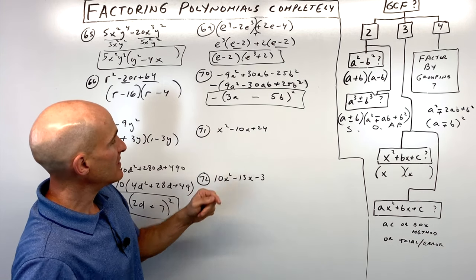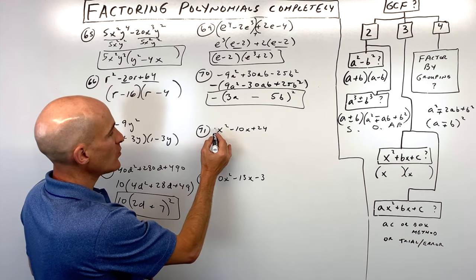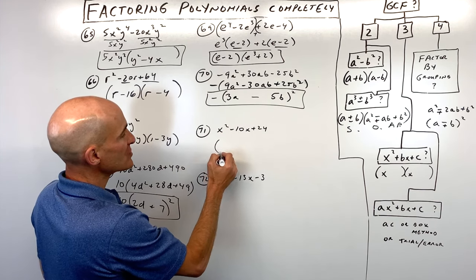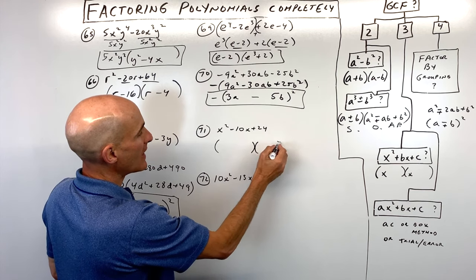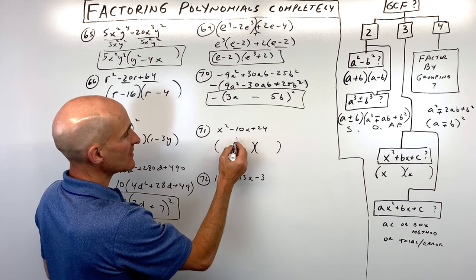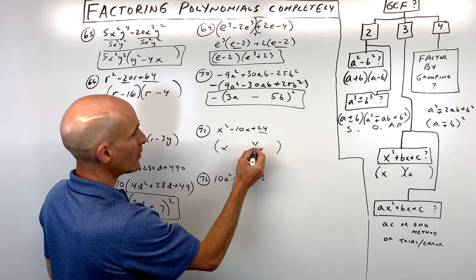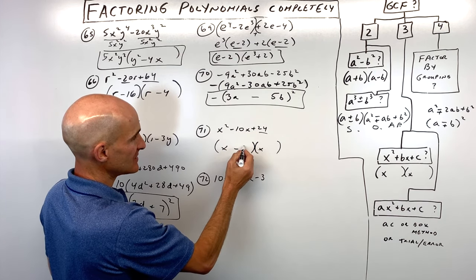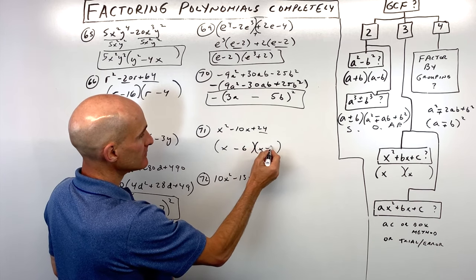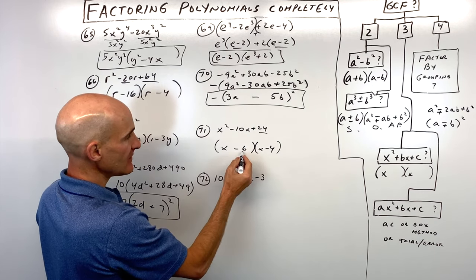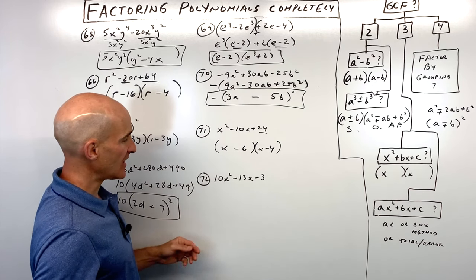Number seventy-one is a trinomial with leading coefficient 1. What multiplies to 24 but adds to negative 10? That's negative 6 and negative 4.